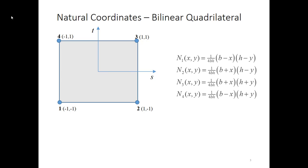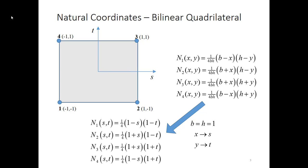Previously, when we looked at the bilinear quadrilateral, it had a width of 2b and a height of 2h, with shape functions defined accordingly. Now, we're going to convert that by setting b and h equal to 1 so we have a standard size, then take our x and turn it into an S, and our y and turn it into a T. That gives us our new shape functions defined in terms of the natural coordinates S and T.